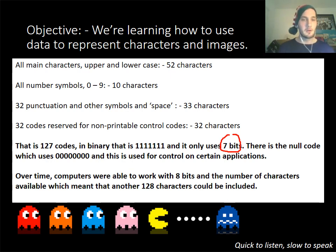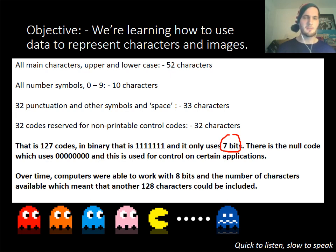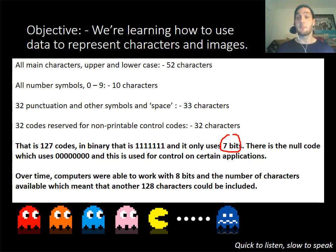ASCII also represents your numbers - 0 to 9. You've also got your punctuation, your space, and then there are control codes, like when you want to print something or use a keyboard shortcut. All of those control codes are also within ASCII, which gives you 127 possible characters available.